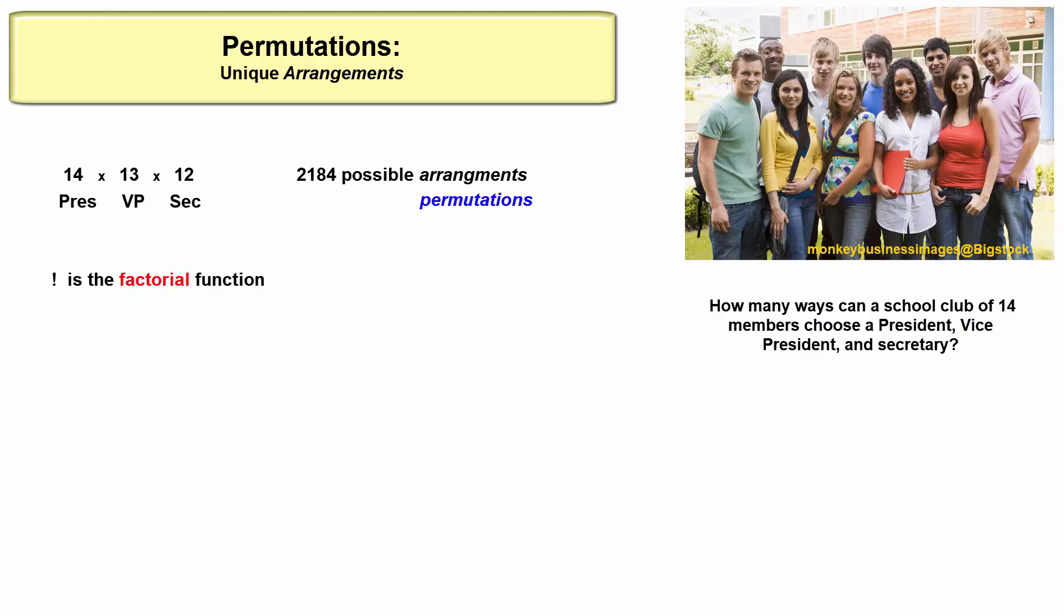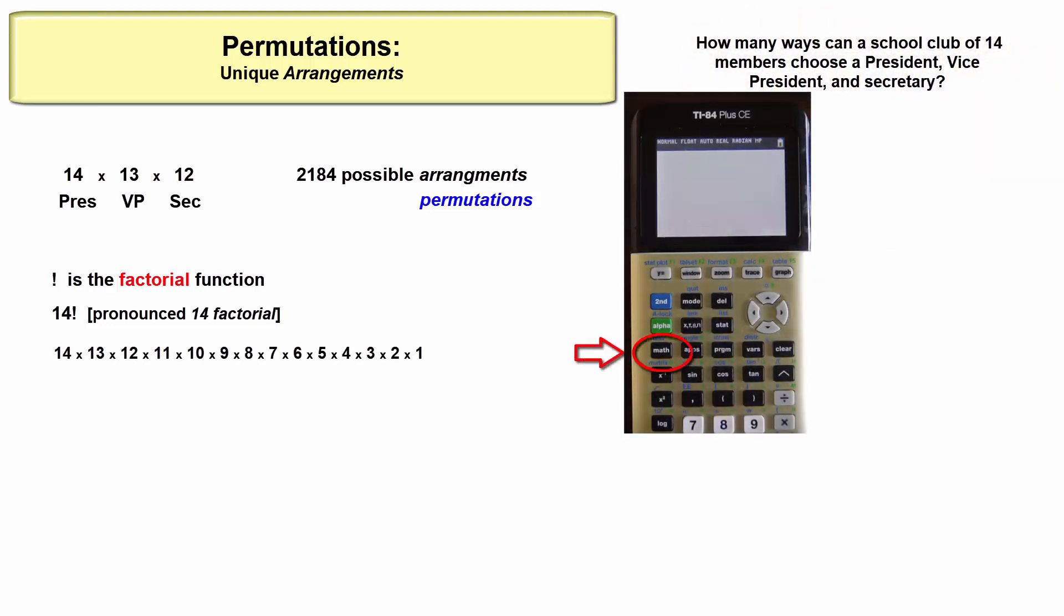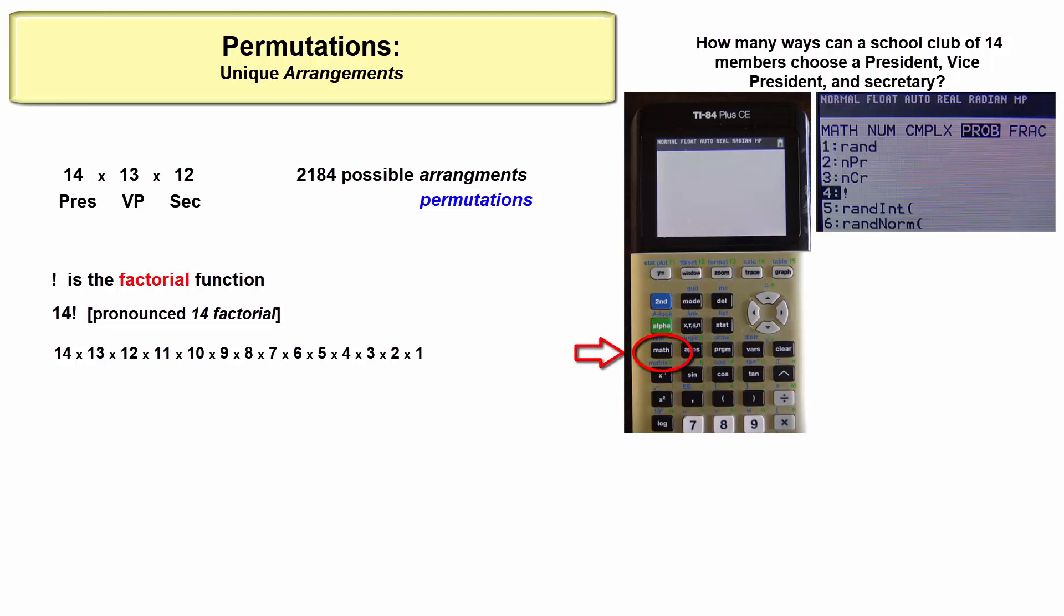The exclamation mark in math represents the factorial function. 14 factorial multiplies all integers from 14 back to 1. The factorial function is under math and probability on the calculator. Check this out - we know that 14 times 13 times 12...